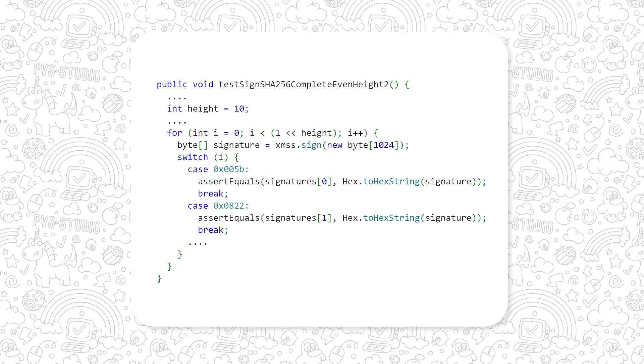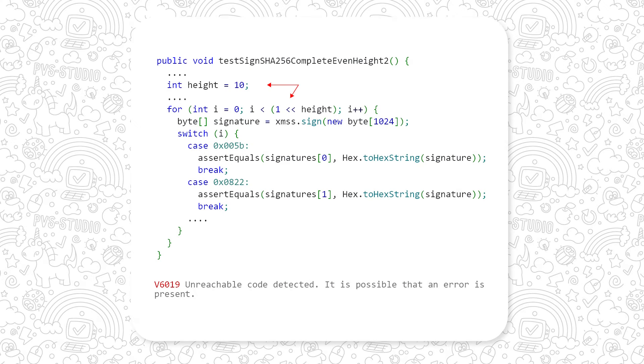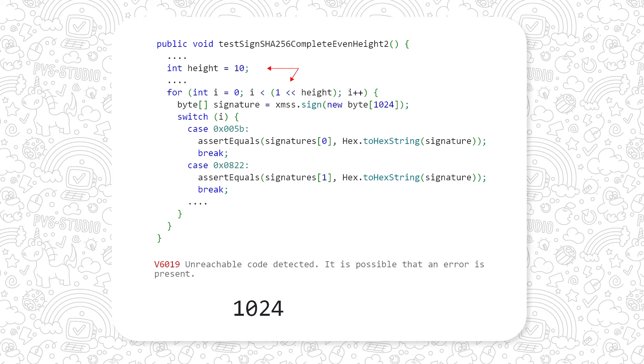So what kind of problems can PVS Studio find in your source code? Let's get straight to it and look at some examples. Here the analyzer found that the variable I never reaches the value of 0822. 2 to the 10th power is 1024, while 0822 converted to decimal is 282. By the way, we found this in a real project — BouncyCastle — during one of our open source project code checks.